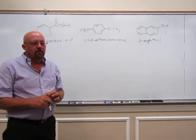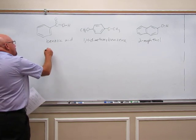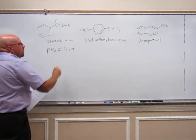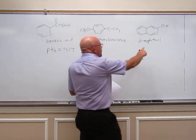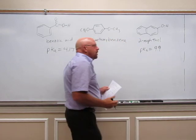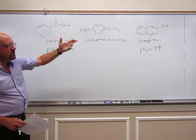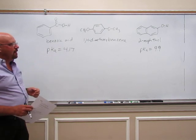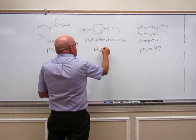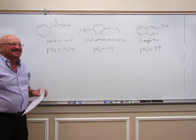The most important thing here is we're going to take advantage of their different acidities. Benzoic acid has a pKa of 4.17. 2-naphthol has a pKa of 9.9. The lower pKa value is of course the most acidic, so benzoic acid is more acidic than 2-naphthol. The 1,4-dimethoxybenzene is not acidic at all — its pKa is about 44.